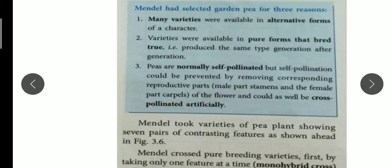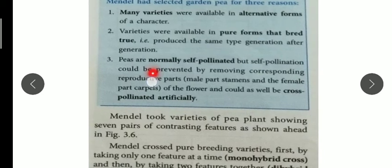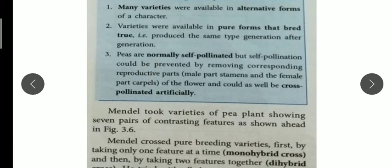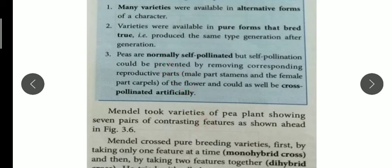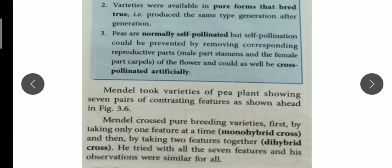This is a very important point: the pea plant is naturally self-pollinated, but we can make it artificially cross-pollinated by removing either the male or female part. That is why there are three reasons. Now, Mendel crossed pure breeding varieties.